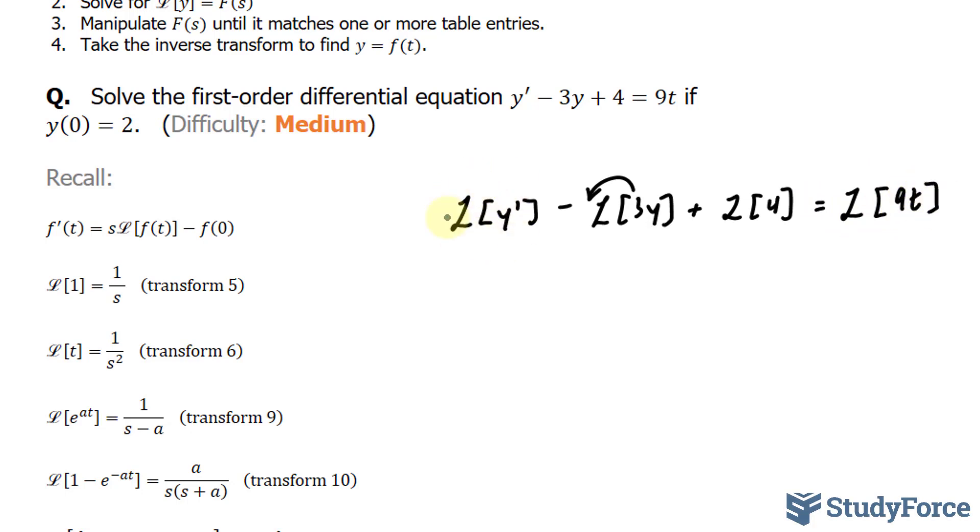Let's start by changing this with what's been given here, where we can replace the transform of y' with s times the transform of y minus what y is at 0, which is 2. Now, this part, like I said, I'll pull out that 3, and I have the Laplace transform of y.